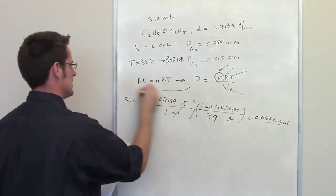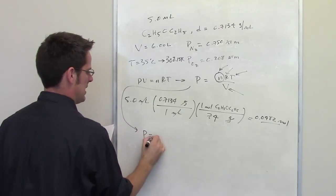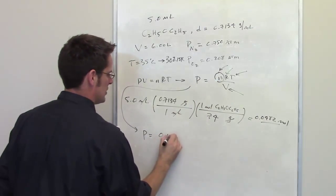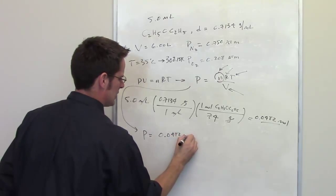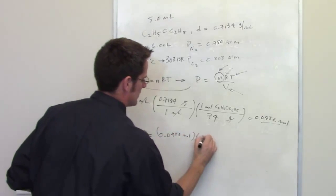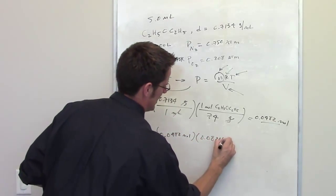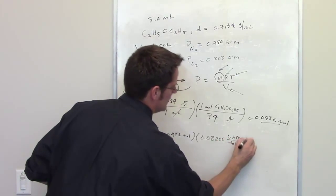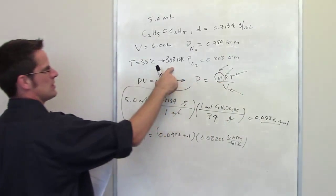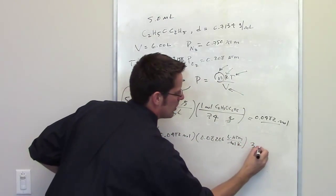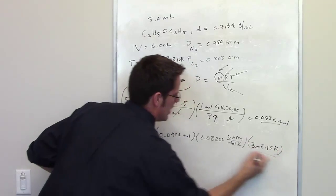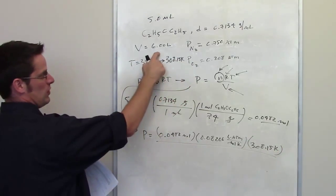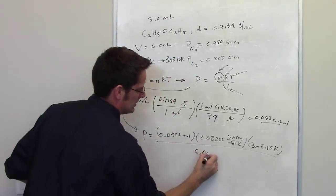Now all I have to do is come down here and calculate P. Pressure is going to be equal to N which is 0.0482 moles multiplied by the ideal gas constant which is 0.08206 liter atmospheres per mole kelvin multiplied by the temperature which is in kelvins 308.15. That is all divided by volume which the volume of the chamber is 6 liters.